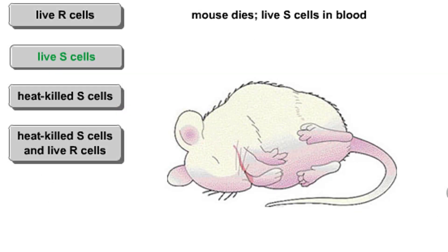Mice injected with S cells developed pneumonia and died. When Griffith examined blood samples from these mice, he found live S cells.